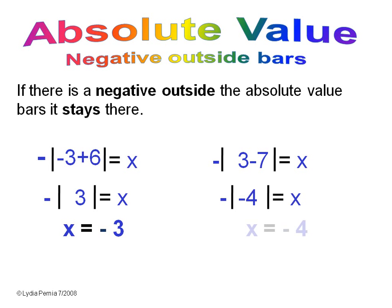Three minus seven is negative four. The absolute value of negative four is positive four, but you have a negative outside, so the answer to this equation is negative four.